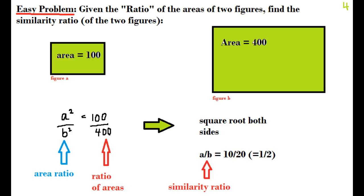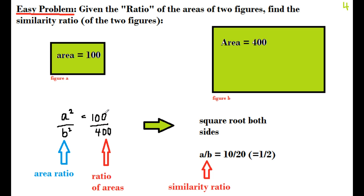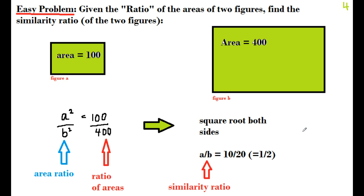Given the ratio of the areas of two figures, find the similarity ratio. Since it's an area ratio, we use a² over b² equal to 100 over 400. We square root both sides to get the similarity ratio a over b: the square root of 100 is 10, the square root of 400 is 20, which reduces to 1 over 2. So the similarity ratio is 1 to 2.